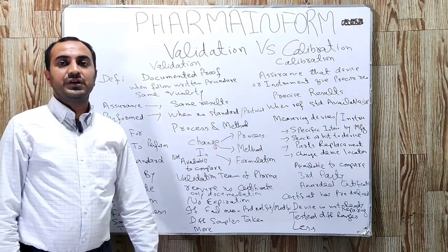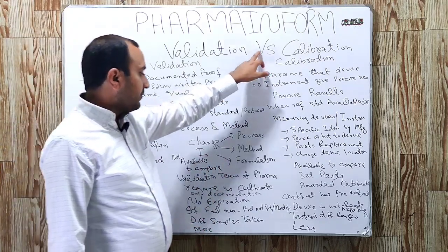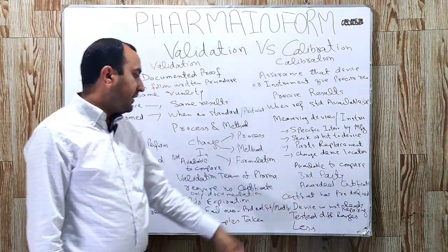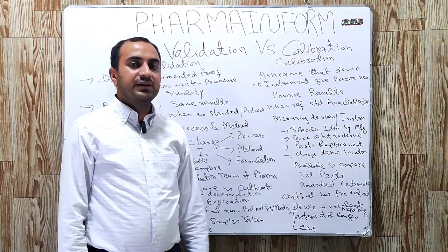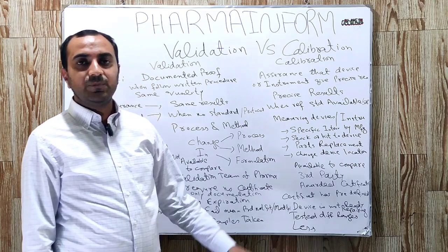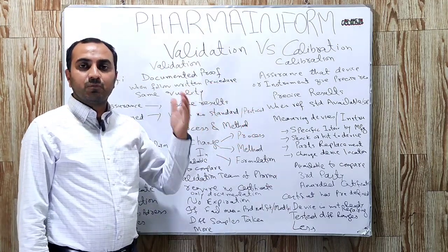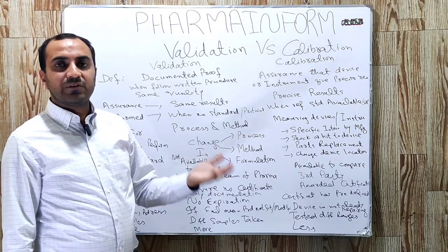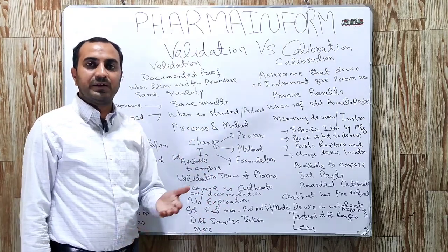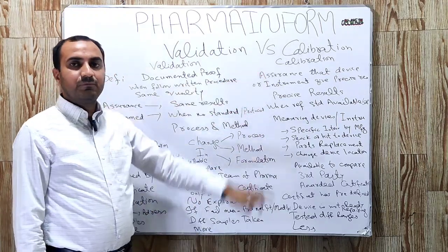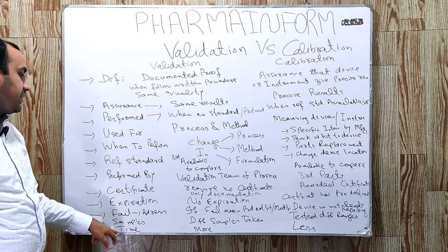Regarding samples: in validation, we take different samples at different time intervals. In calibration, we do not take any samples. Instead, the device is tested against different ranges. For example, with a weighing balance, we put weights of 5 kg, then 10 kg, 15 kg, and 20 kg, depending on the capacity of the balance.